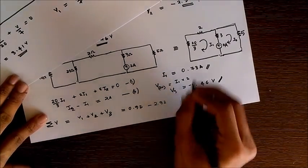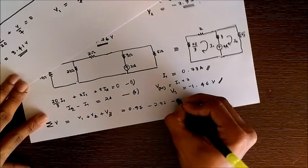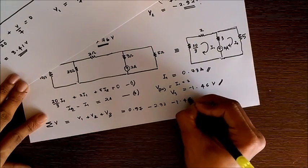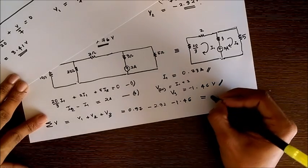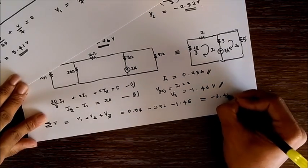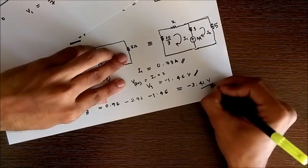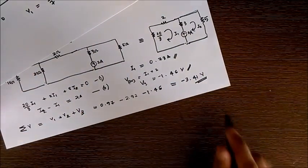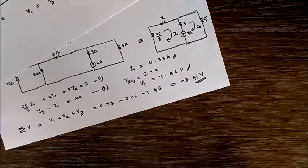We get V equals V1 plus V2 plus V3, which is 0.97 in the first case minus 2.92 in the second and minus 1.46 in the third, which is a total of minus 3.41 volts. This is the actual voltage drop in the 2 ohm resistor due to the combined effect of all three sources.